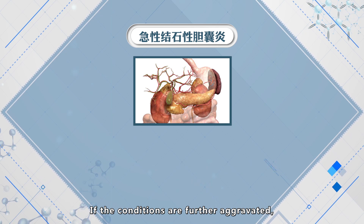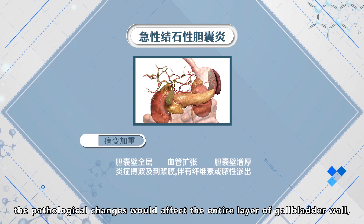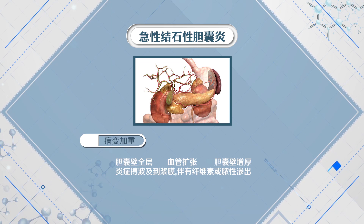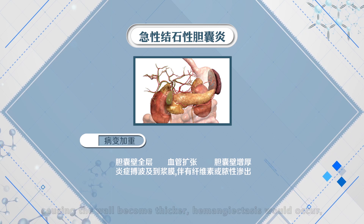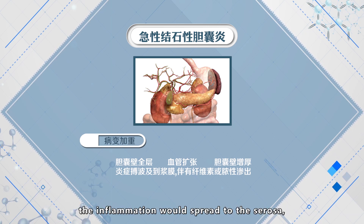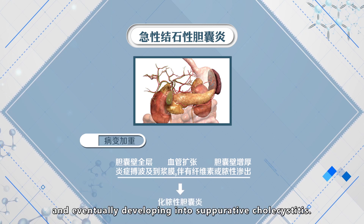If conditions are further aggravated, the pathologic changes would affect the full layer of the gallbladder wall, causing the wall to become thicker. Hemorrhagic changes would occur. The inflammation would spread to the serosa, accompanied by fibrinous exudate, eventually developing into suppurative cholecystitis.